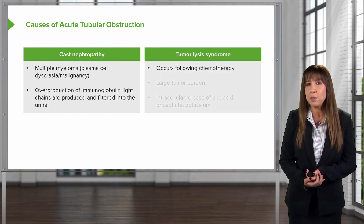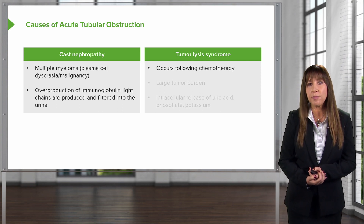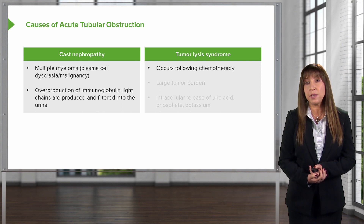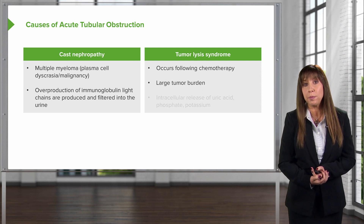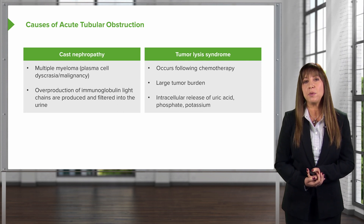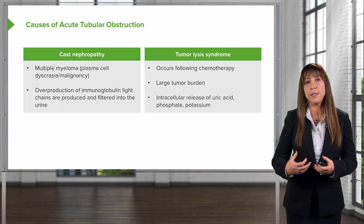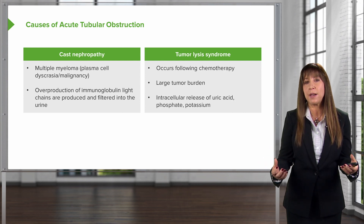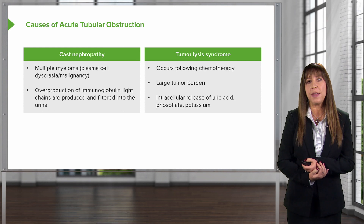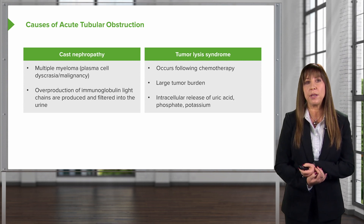We can also see acute tubular obstruction with tumor lysis syndrome, just like our patient had. This can occur following chemotherapy or if somebody has a very high-grade tumor. In this situation, the tumor essentially liquefies, and we see intracellular release of uric acid, phosphate, and potassium — and that is most indicative in our patient population.